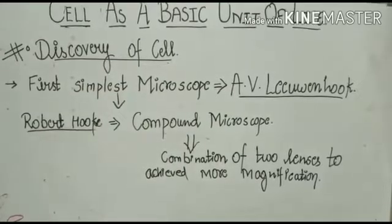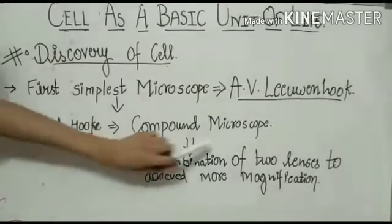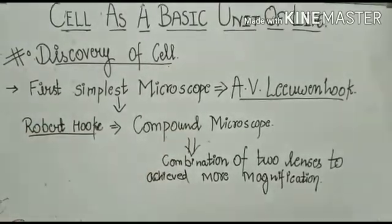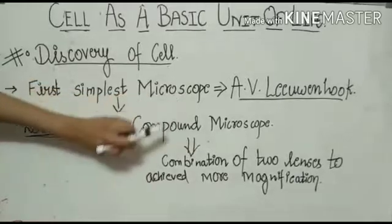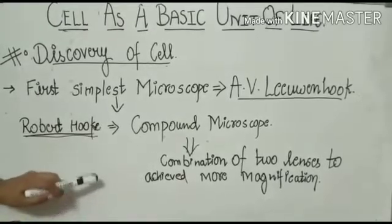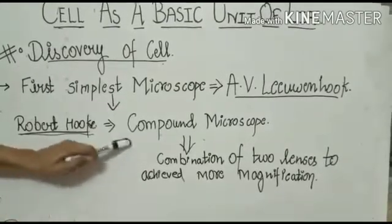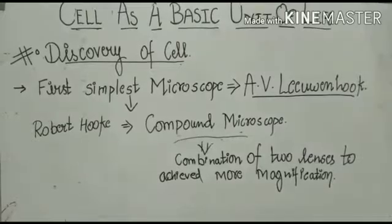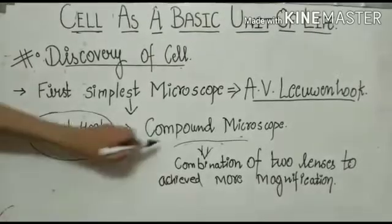But the microscope was very simple. We cannot see a lot of magnified things. So the first compound microscope was invented by Robert Hooke. They combined two lenses to achieve more magnification.